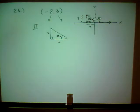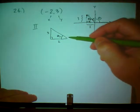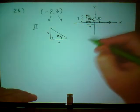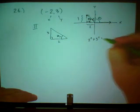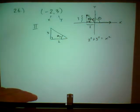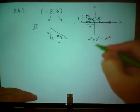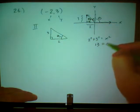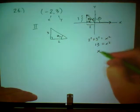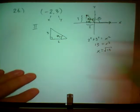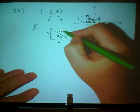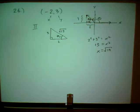So same routine as always. I need to find the hypotenuse here. 2 squared plus 3 squared is going to be the hypotenuse squared. I'll call it x. 4 plus 9 looks like 13 equals x squared. It looks like this hypotenuse is going to be the square root of 13.